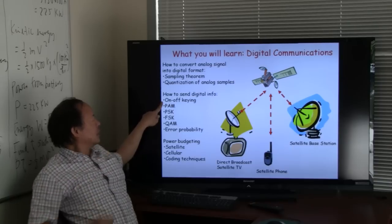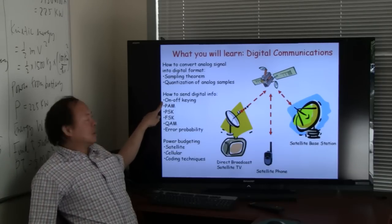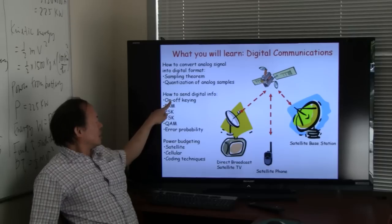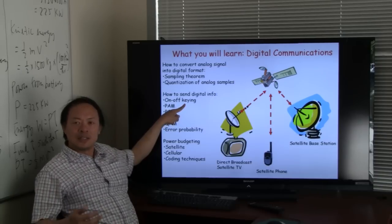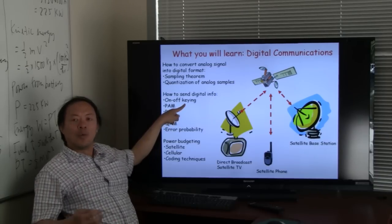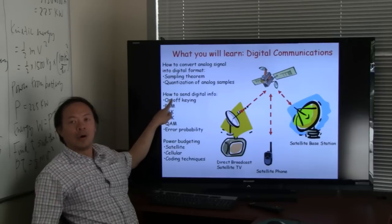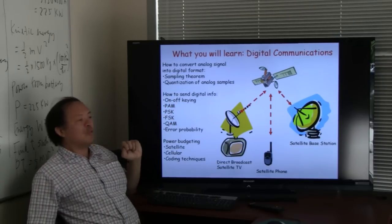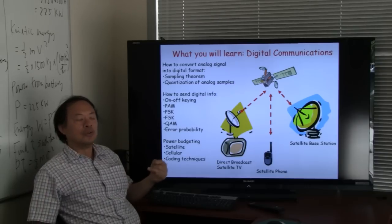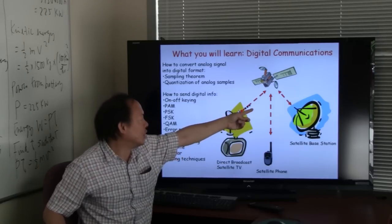Now, for example, we can send the digital data over a wired medium using what is known as an on-off keying. Very much similar to you can send data over a wire by means of Morse code. Either it's on or it's off. If you want to send data over a wireless channel, you need to send the data through, say, radio waves.